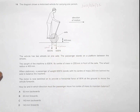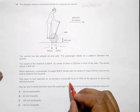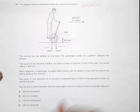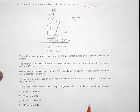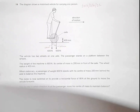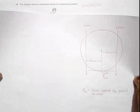The motor is now switched on to provide a horizontal force of 90 Newton at the ground to move the vehicle forward. To move forward, the motor creates a force such that the earth exerts a reaction force on the vehicle plus person to drive it forward.